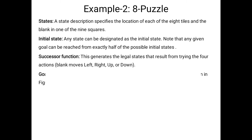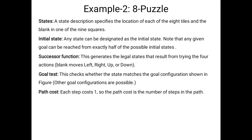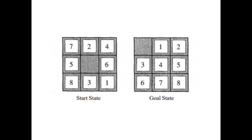The starting state is the left-side diagram and our goal is the right-side configuration. In the nine boxes, one box is empty and the remaining boxes contain numbers randomly. The left side has: seven, two, four, five, blank, six, eight, three, one. The goal state has the first box empty, then one, two, three, four, five, six, seven, eight in order.